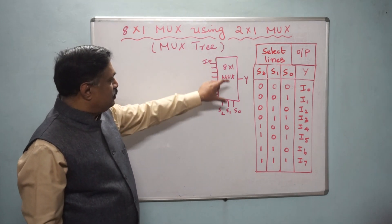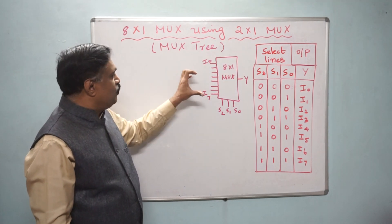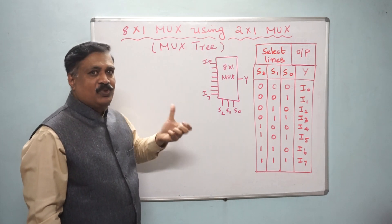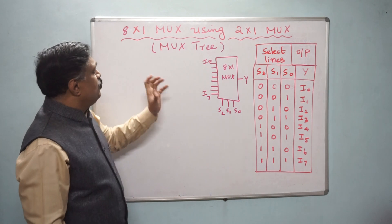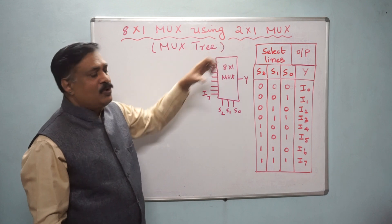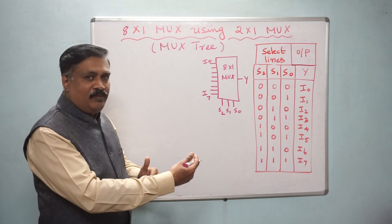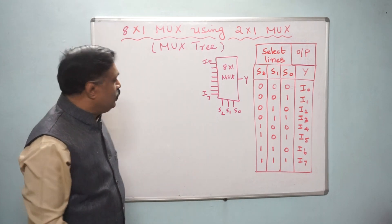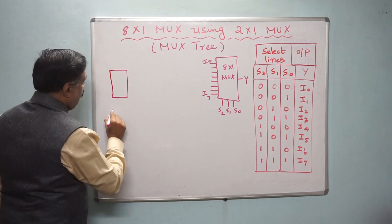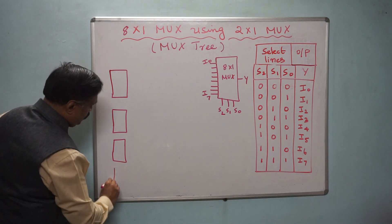We are going to construct this 8 by 1 using 2 by 1 — that is the MUX tree, higher order designing using lower order. Now, since there are 8 inputs and each 2 by 1 MUX has 2 inputs, we require 4 first-level MUXes: one 2 by 1, another 2 by 1, another 2 by 1, and another 2 by 1.